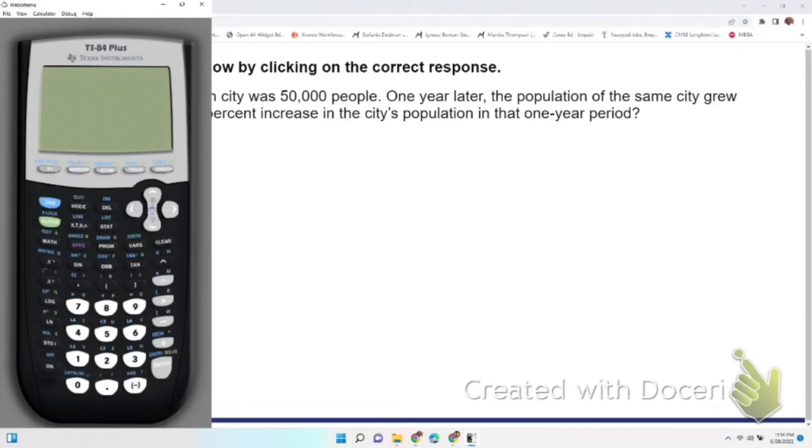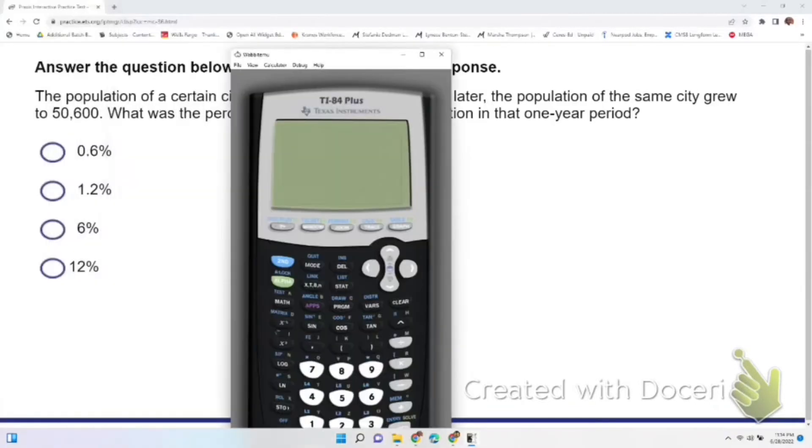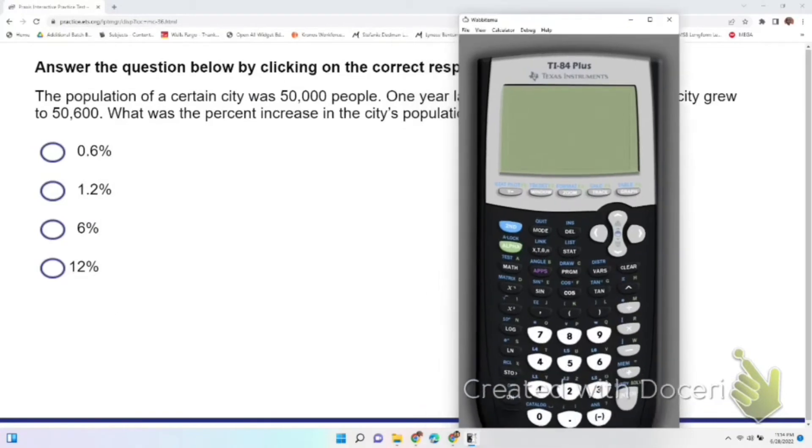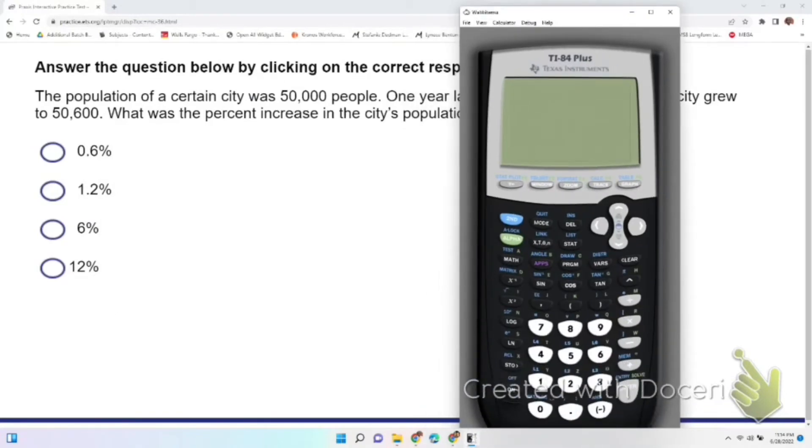So I'm going to go ahead and do that: 50,600 divided by 50,000. That gives me 1.012. So the one in 1.012 just says hey, this thing went up—it's a percent increase.